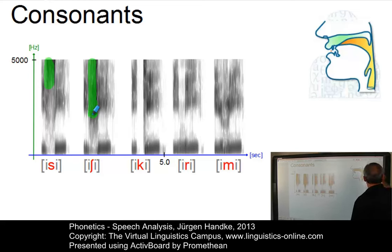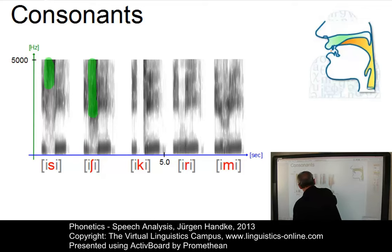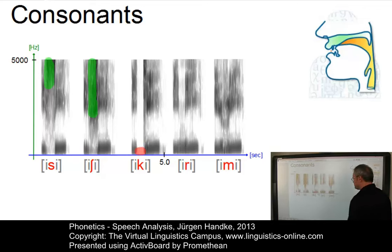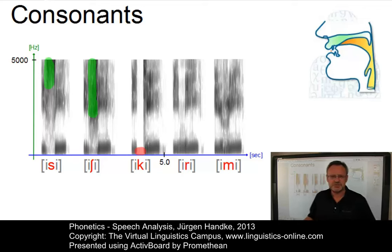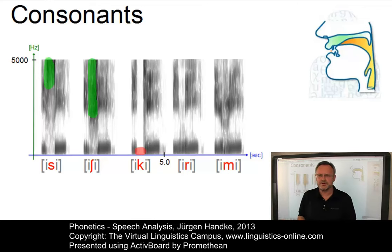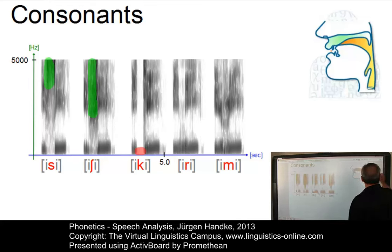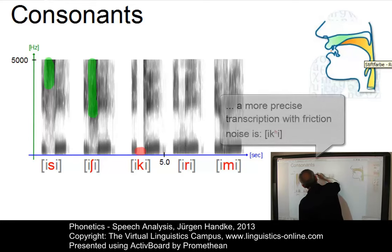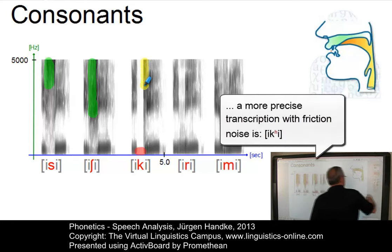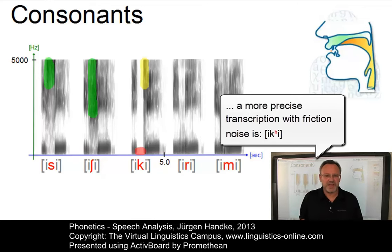Plosives typically involve a portion of silence, especially when they occur between vowels, such as E-ki. This portion of silence is associated with the closure that we create in the vocal tract. And then, in the case of voiceless plosives, they also involve friction noise for the little puff of air that is released when we open the closure — which we call aspiration in articulatory phonetics.